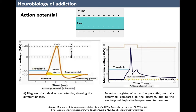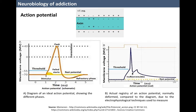Neurons understand and use an electrical language based on the charges from the ions and molecules that are inside and outside the cellular membrane. When a neuron is quiet or silent, its internal environment has more negative electrical charges than the outside. A single neuron can communicate with many others at the same time and can integrate the multiple electrical signals it receives.